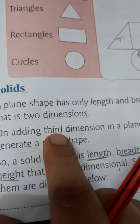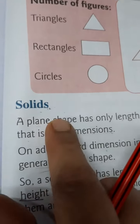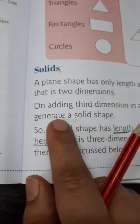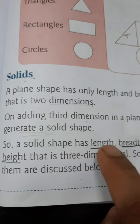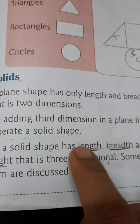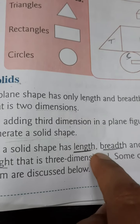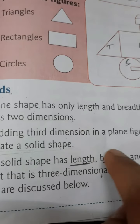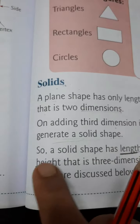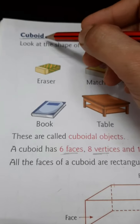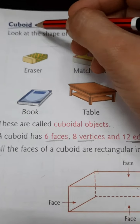When we add a third dimension to a plane shape, it becomes a solid shape. So it has three dimensions — that is, length, breadth, and height. The first solid shape is cuboid.